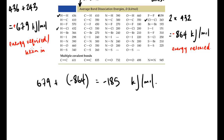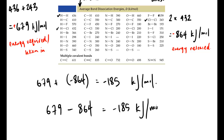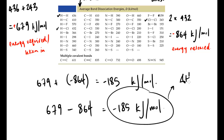This value we've calculated is the enthalpy change for that reaction. In this case it is an exothermic reaction, as we can see from the negative sign. The delta H, the enthalpy change, is negative — therefore it's an exothermic reaction.